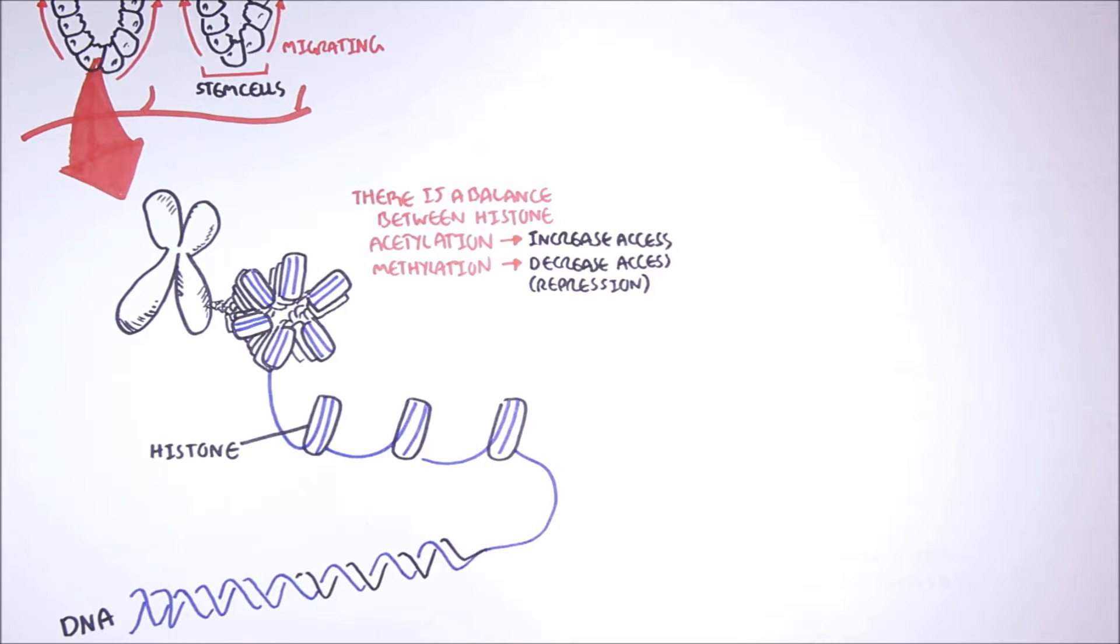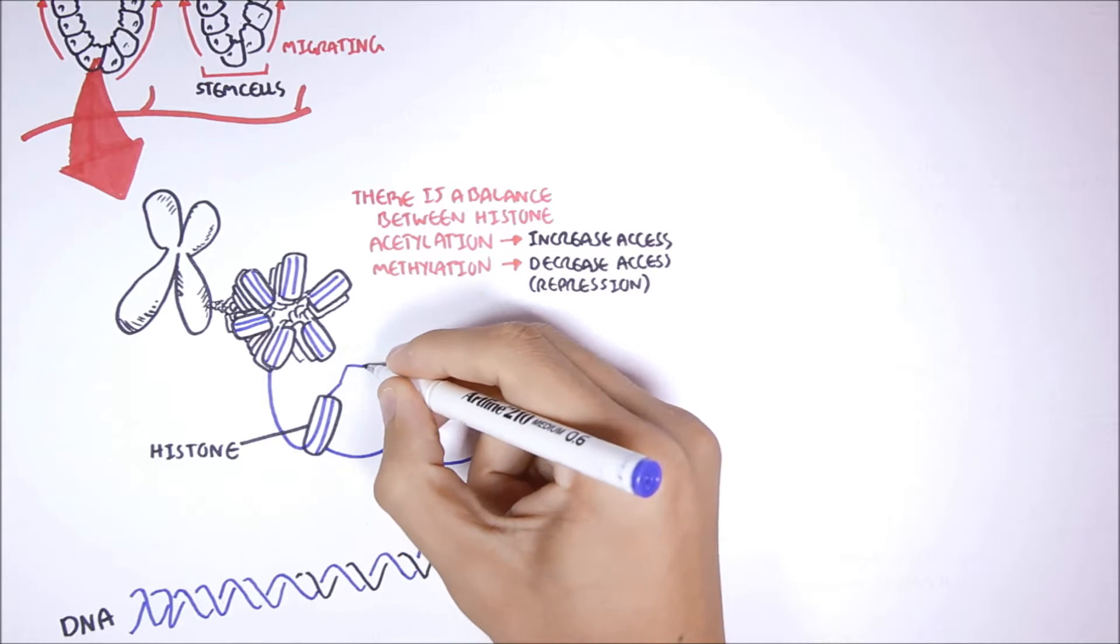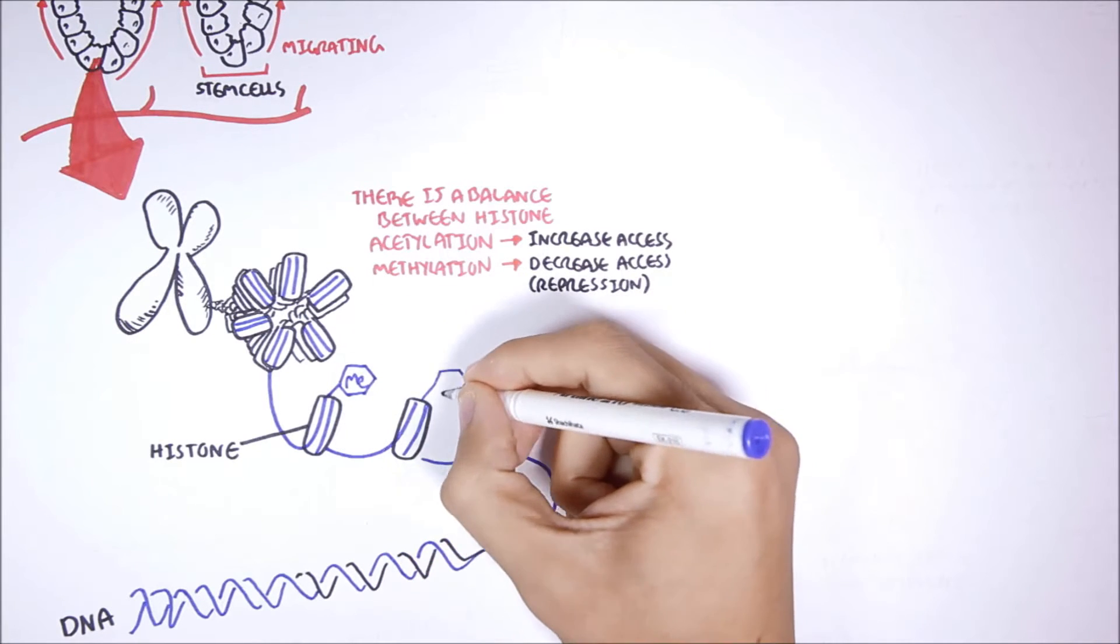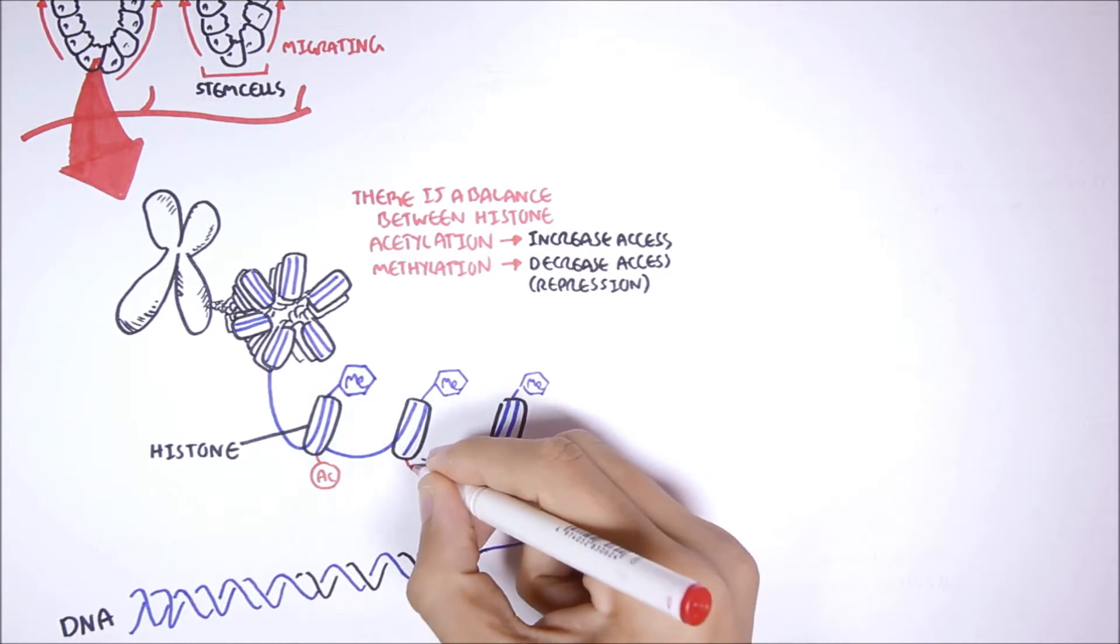Therefore, if there is a lot of methylation, certain genes may not be activated. So looking at the histones here, we have a balance between histone methylation, ME, and histone acetylation, AC.